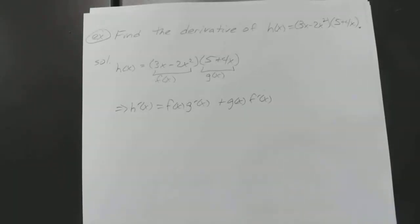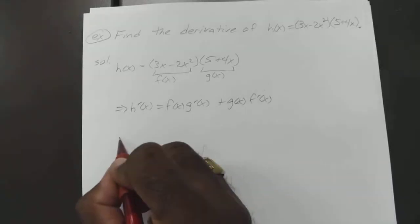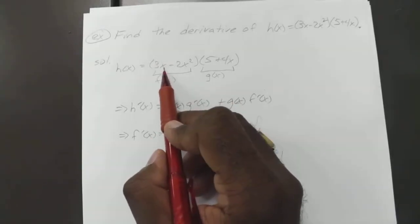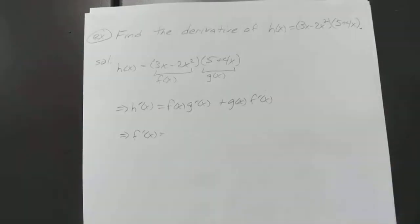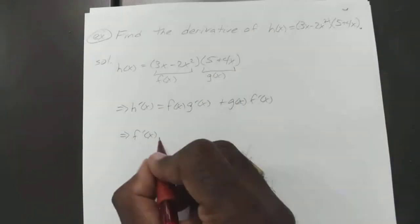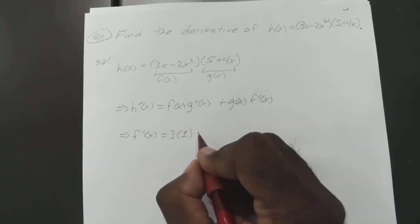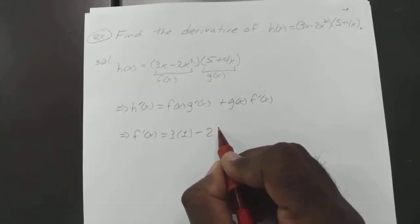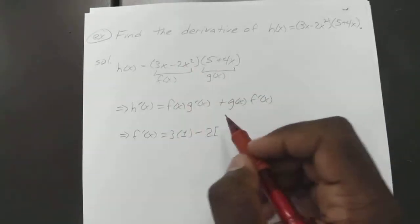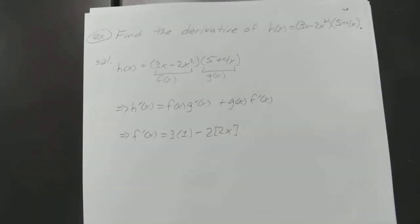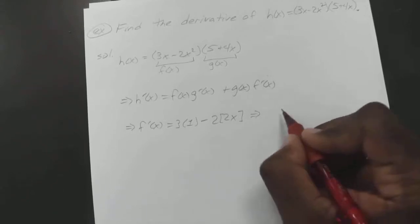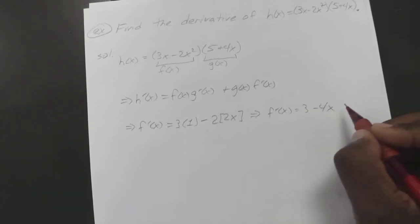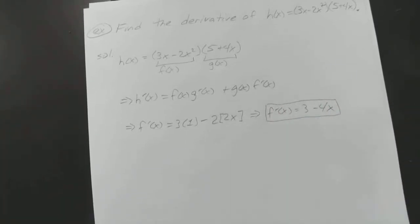So that means we have to find f prime of x and g prime of x. So f prime of x: 3 times the derivative of x is just 1. Minus 2x squared — bring down the 2, x to the first. So that means your f prime of x is going to equal 3 minus 4x.